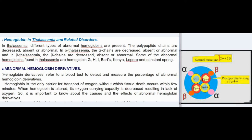Hemoglobin in thalassemia and related disorders: in thalassemia, different types of abnormal hemoglobins are present. The polypeptide chains are decreased, absent, or abnormal. In alpha thalassemia, alpha chains are decreased, absent, or abnormal; in beta thalassemia, beta chains are decreased, absent, or abnormal. Some abnormal hemoglobins found in thalassemia include Hb G, H, I, Barts, Kenya, Lepore, and Constant Spring.